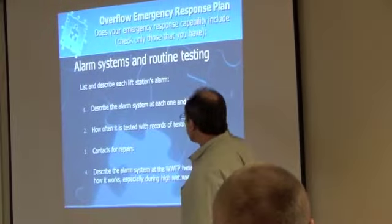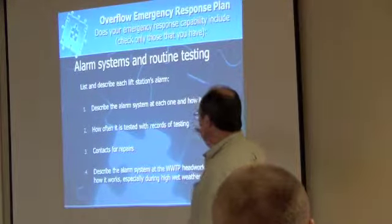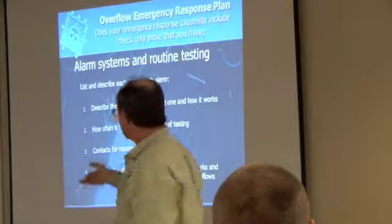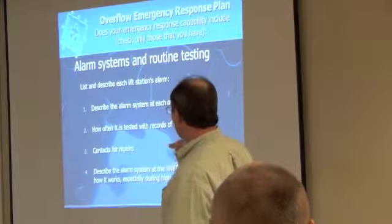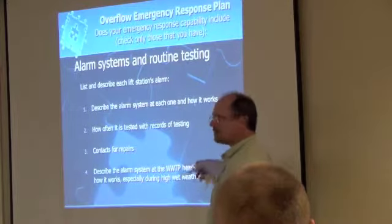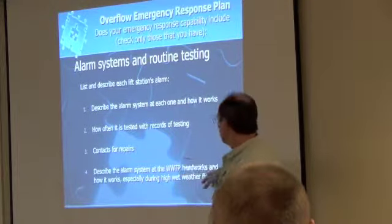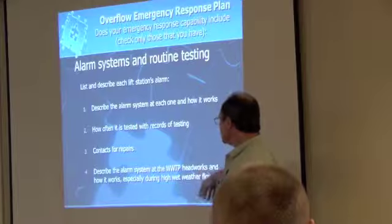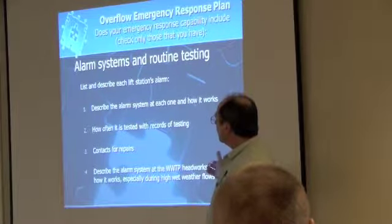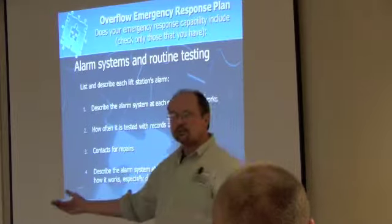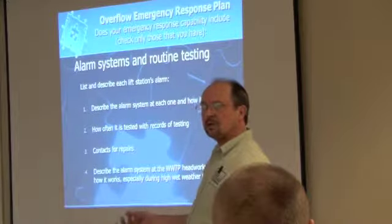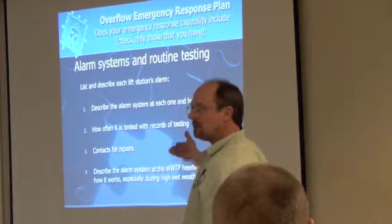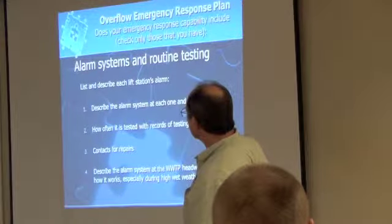For alarm systems and routine testing, these are lift stations. You're going to describe each lift station's alarm system, how it works, and how often it's tested—and you're going to keep records of that testing. Contacts for repairs, hopefully the contacts are there. And if there's an alarm system at the treatment plant, especially the head works, during high flow events—how it works, especially during high weather flows. If you have 10 lift stations, you'd have specs and info for each, maybe more detail on each alarm system.